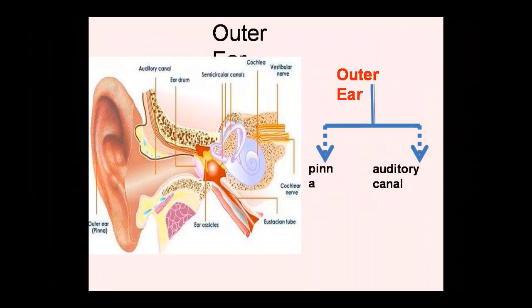The outer ear also has the function of sound localization — it works to localize sound. As I mentioned at the start, we need to identify what sound is coming and where it is coming from. Sound localization for sounds approaching from the left or right is determined in two ways.